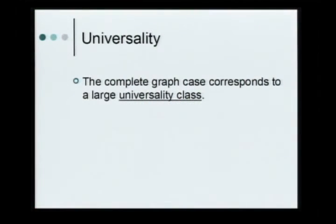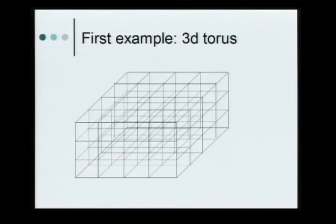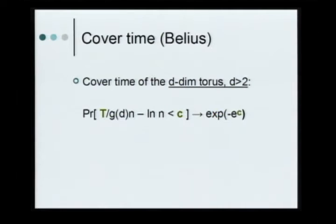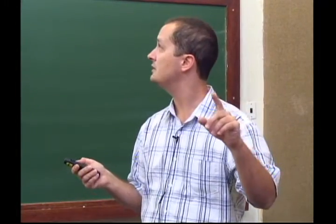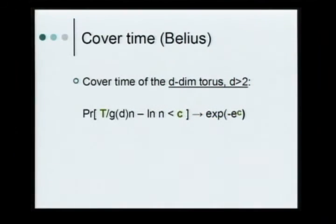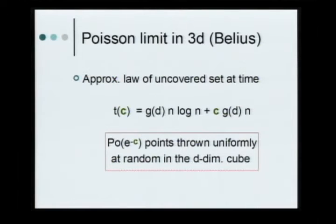What's in that universality class? Here is the 3D torus — you walk on the intersections of lines, equally likely to step in either direction, and if you try to jump out, you come back in through the other side. As it turns out, David Bilius from ETH in Switzerland, in a very recent preprint, showed that the cover time follows the Gumbel law. Here N is the number of vertices, and G of D is a parameter — the value at the origin of Green's function for random walk on Z^D. You need D bigger than 2 for that to make sense.